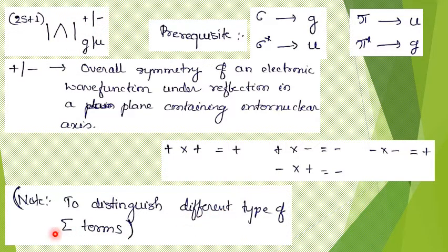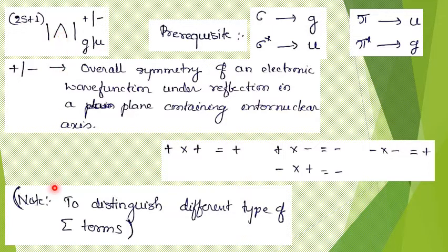The plus or minus is used to distinguish different types of Sigma terms. When Lambda equals 1 the letter written is Pi, and for Pi it is not necessary to mention plus or minus. Similarly, G and U are not needed for heteronuclear diatomic molecules. For anything other than Sigma, it is not necessary to mention plus or minus. Only for Sigma terms must you be careful about this.